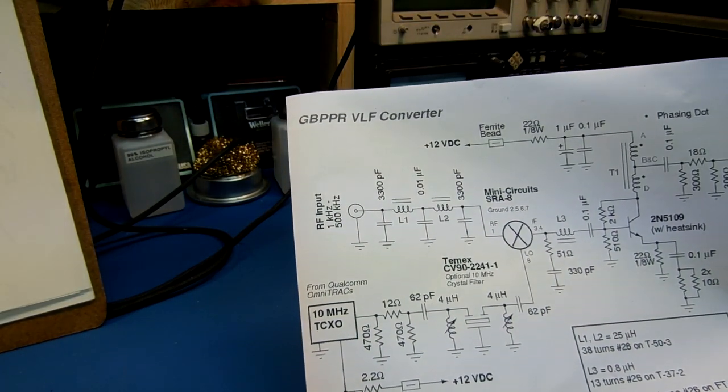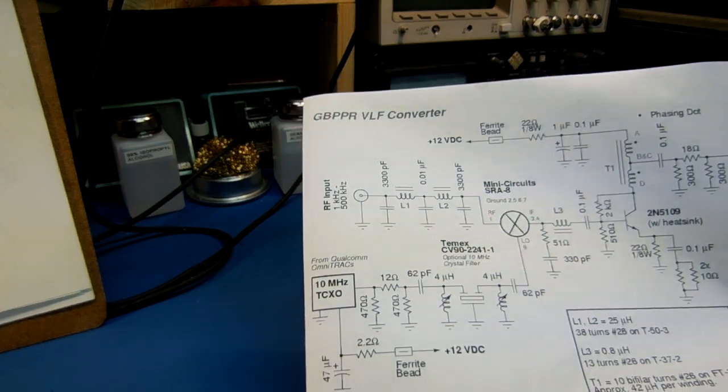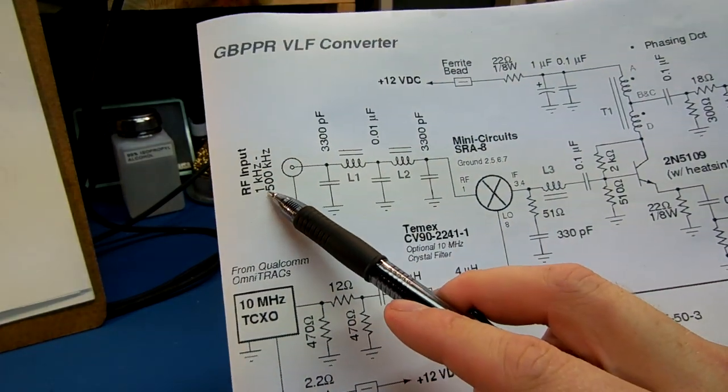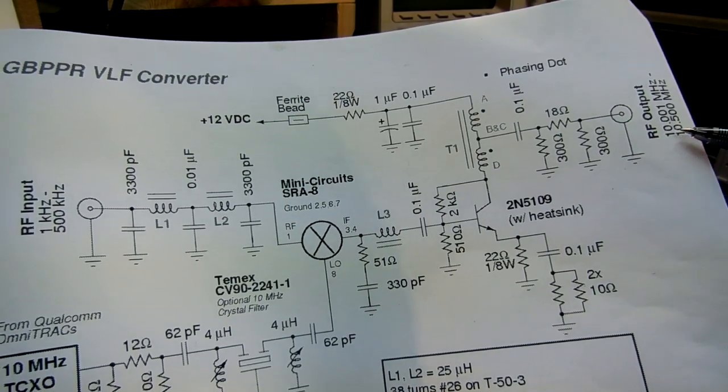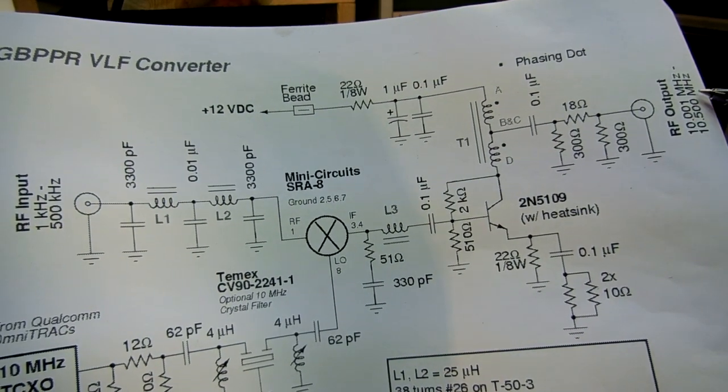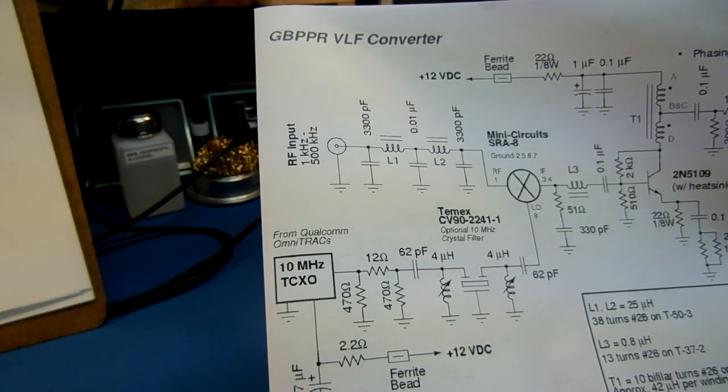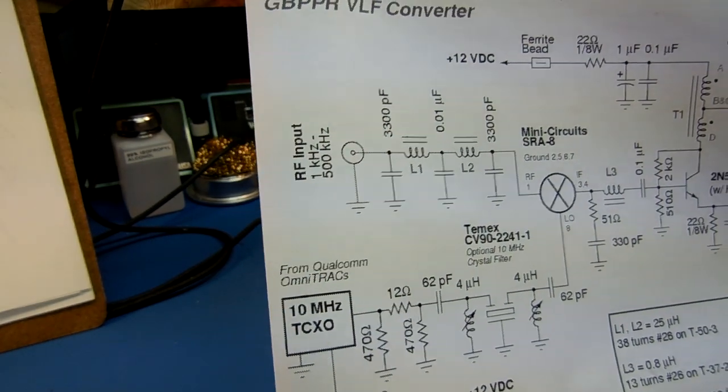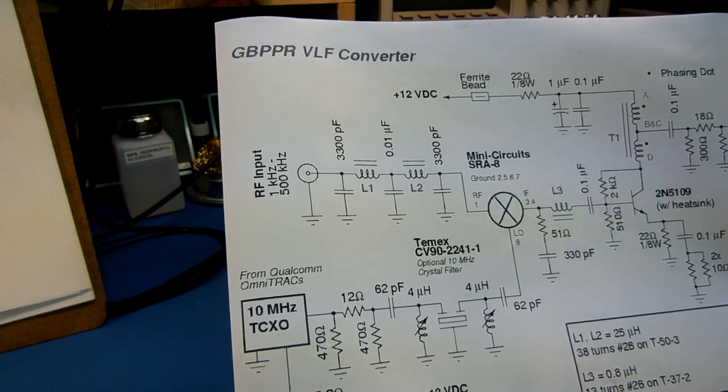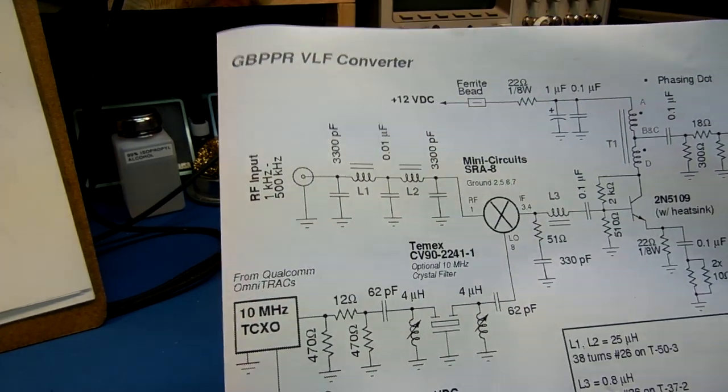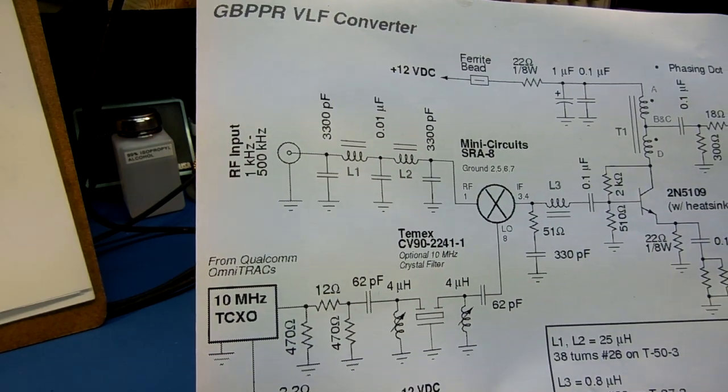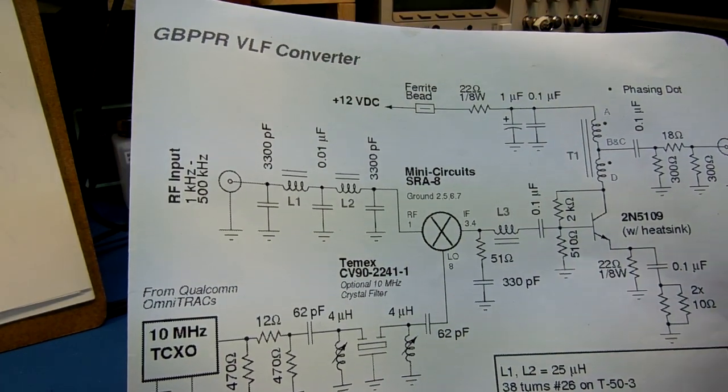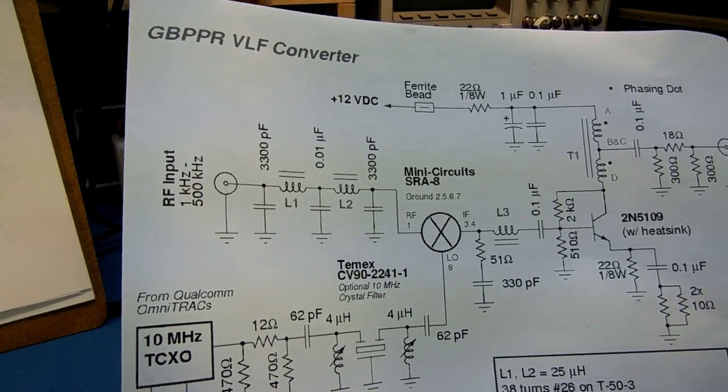This is going to be an overview of a very low frequency upconverter that I built. This particular device is used for upconverting 1 kHz to 500 kHz input up to 10.001 MHz to 10.5 MHz output. This is useful for extending the low frequency range of a communications receiver or a spectrum analyzer or other pieces of RF test equipment. They tend to have very poor low frequency response. So by designing a quality front end you can actually upconvert those low frequencies up to a higher frequency that the piece of test gear is more capable of receiving and demodulating.